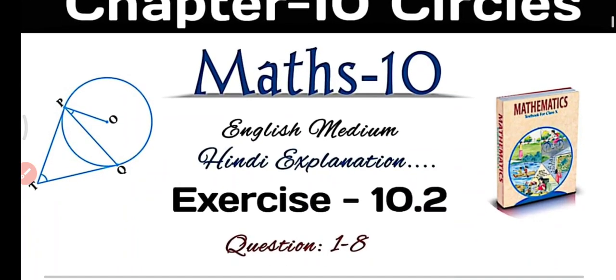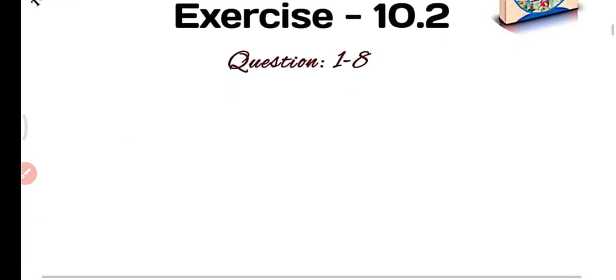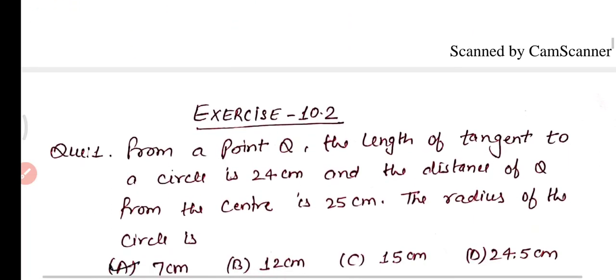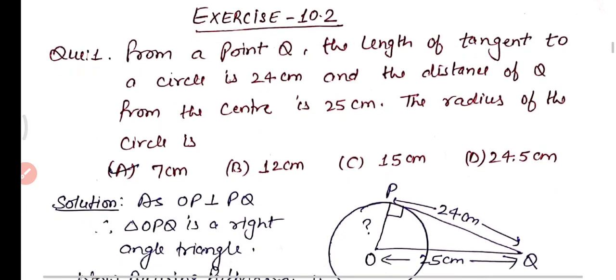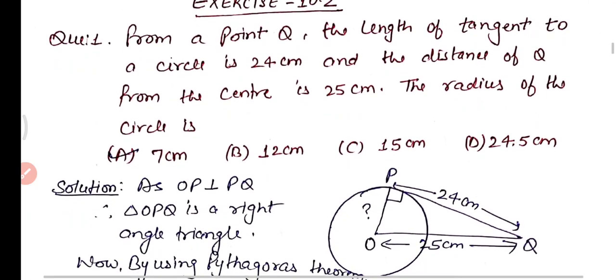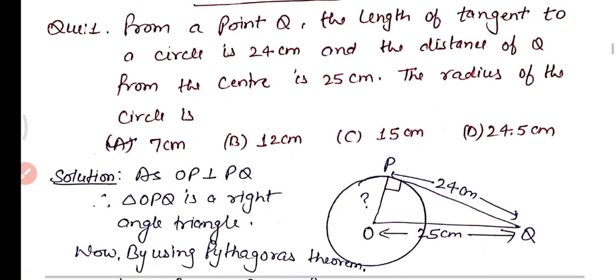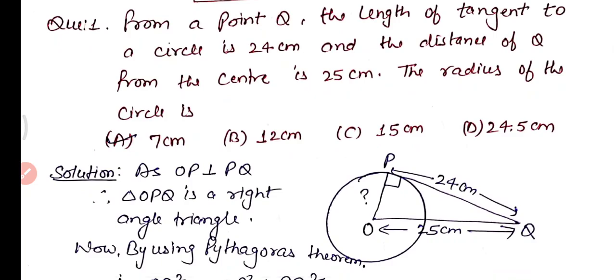So now let's begin with Question 1: from a point Q, the length of the tangent to the circle is 24 centimeters and the distance of Q from the center of the circle is 25 centimeters. The radius of the circle is: (a) 7 cm, (b) 12 cm, (c) 15 cm, or (d) 24.5 cm. Let's see what is given in this question.